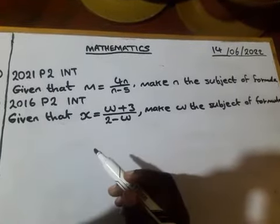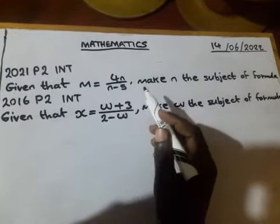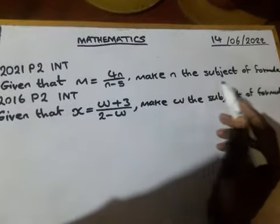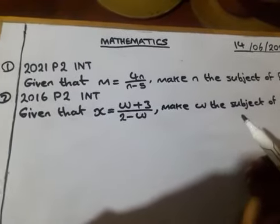Given that m equals 4n over n minus 5, make n the subject of the formula.